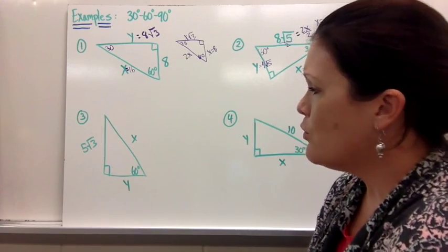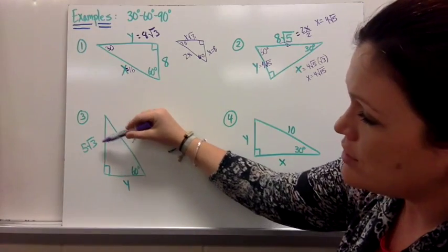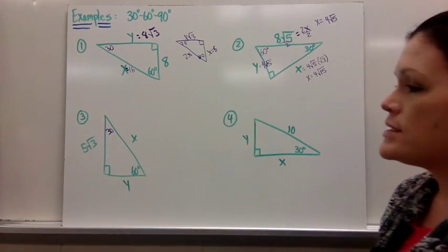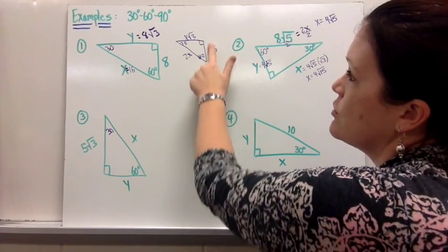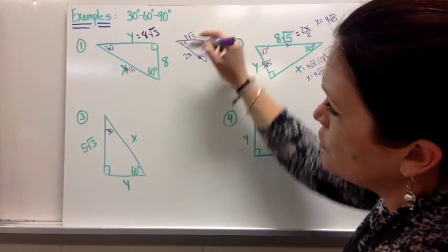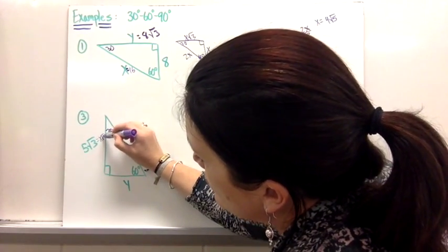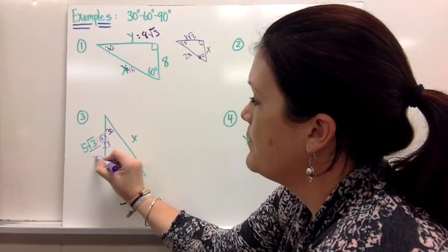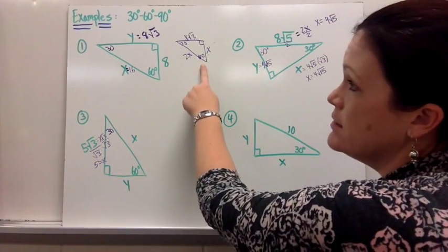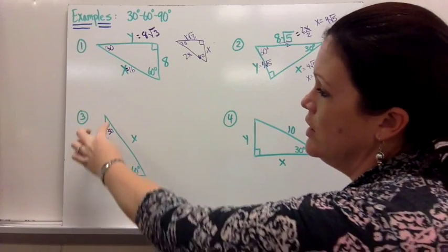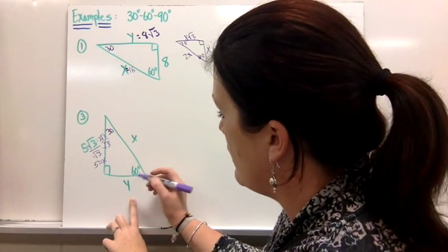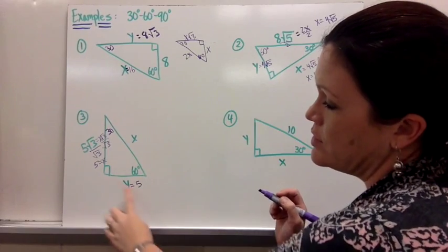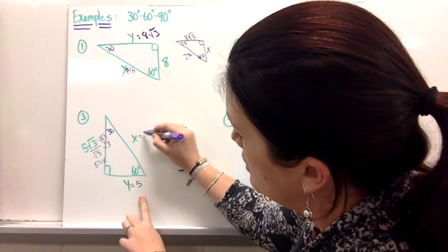For number 3, you're given the side across from the 60-degree angle, which equals x square root 3. Setting that equal to x square root 3 and dividing by the square root of 3 gives x equals 5. In this problem, x refers to the side across from 30 degrees, labeled y, so y equals 5. The hypotenuse x is 2 times the short side, so x equals 10.